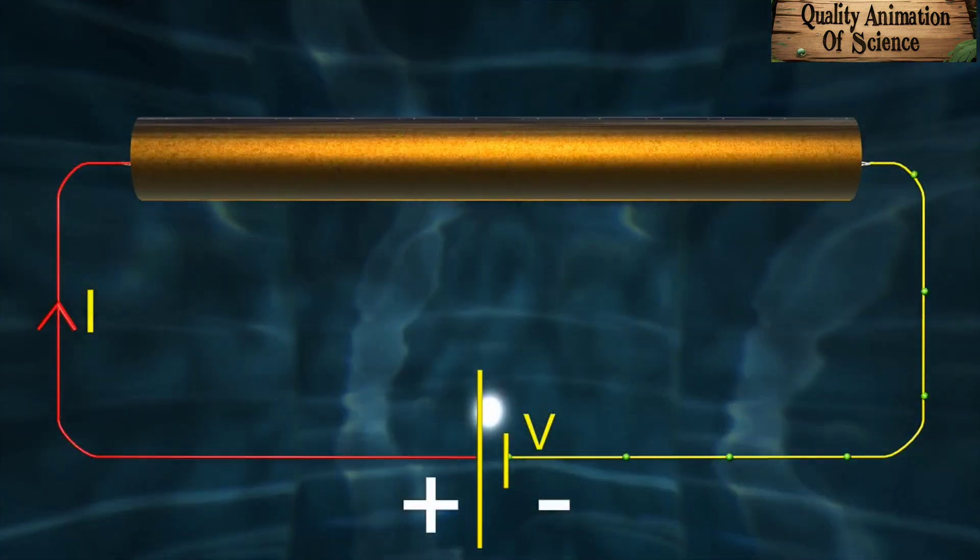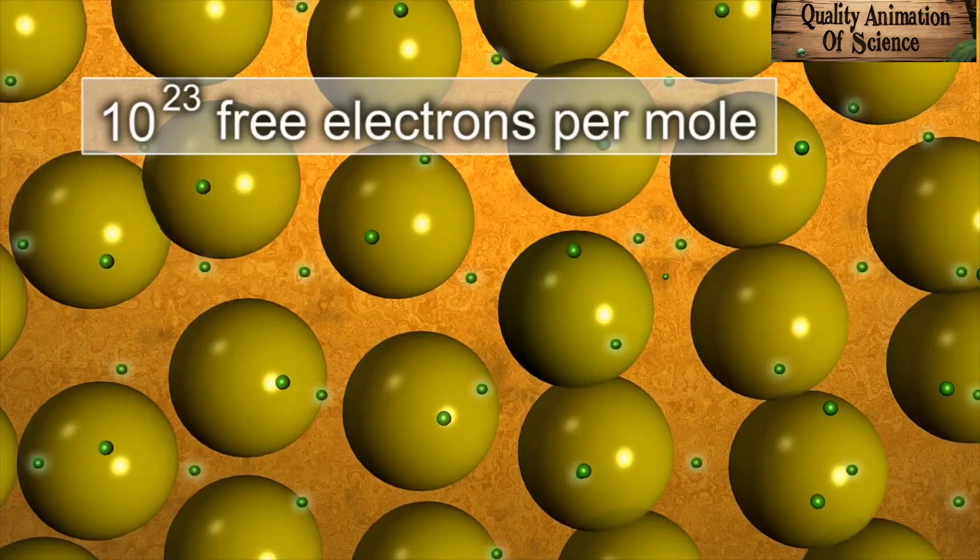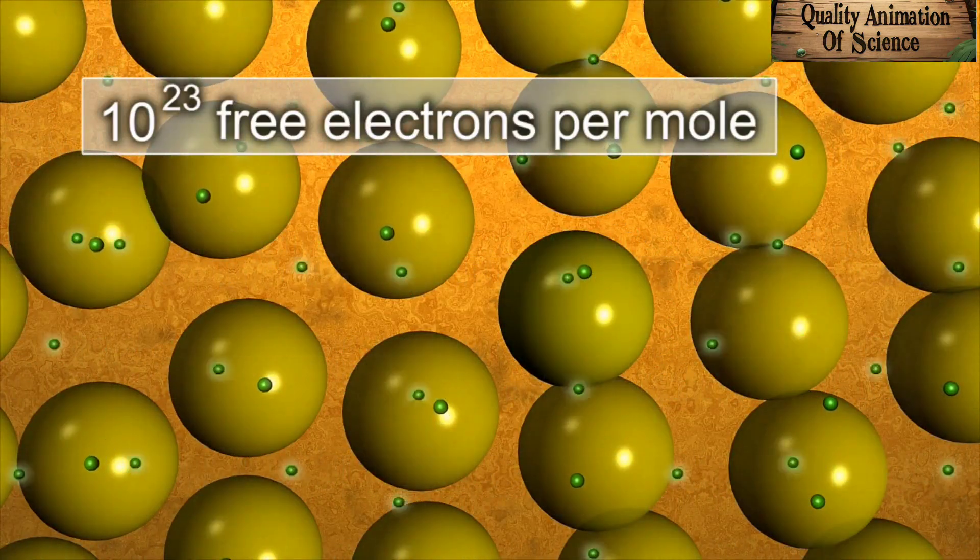In comparison, a metallic conductor like copper has about 10 raised to 23 free electrons per mole.